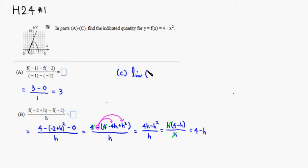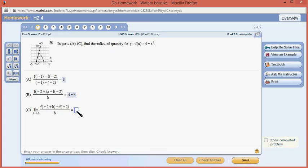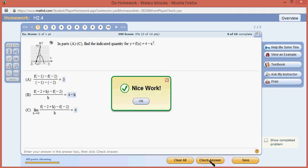So we take the limit of this guy, part b, which came out to be 4 minus h. Then we send h goes to 0. So that's 4 minus 0 is 4. So let's type that in. This is 4. Let's check. All right, we got that.